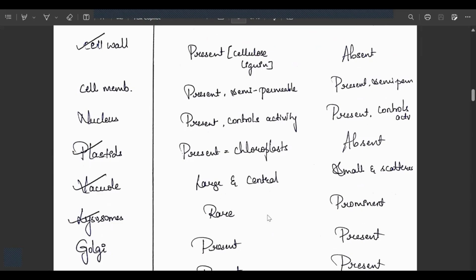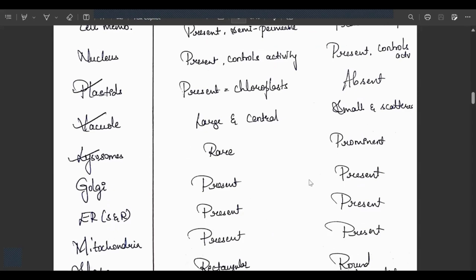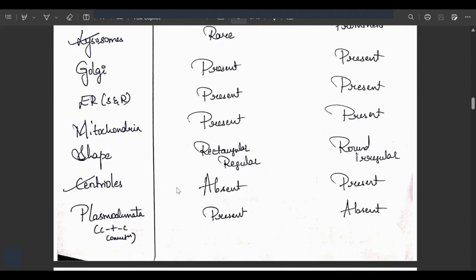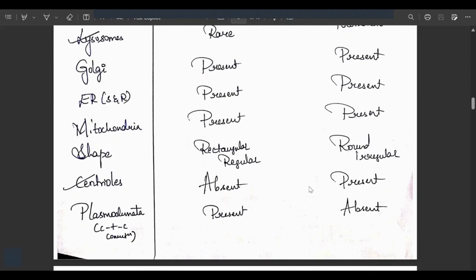Lysosomes are rare in plant cells but prominent in animal cells. Golgi apparatus and endoplasmic reticulum present in both. Mitochondria present in both. Shape: plant cells have regular shape like rectangle while animal cells are irregular or round shaped. Centrioles absent in plant cells, only present in animal cells where they help in cell division. Plasmodesmata for cell-to-cell communication present in plant cells but absent in animal cells.